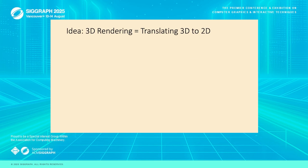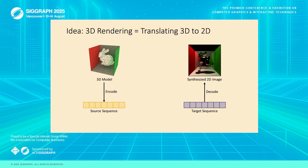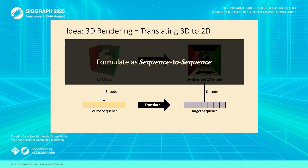Let's bring this idea back to rendering. Imagine we treat a 3D scene as a sentence where each word or token is simply a triangle in the mesh. Following that logic, the final 2D image is also a sentence where each word represents a pixel or block of pixels. This means we can reframe the entire rendering process as a translation task, going from a sequence of triangles to a sequence of pixels. Essentially, we have just turned 3D rendering into a sequence-to-sequence transformation problem.